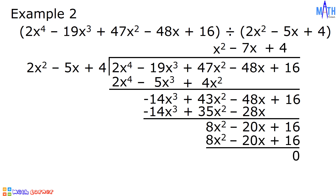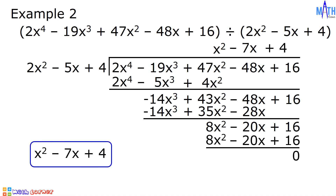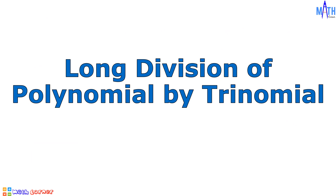it means that 2x squared minus 5x plus 4 is a factor of 2x raised to the 4th minus 19x cubed plus 47x squared minus 48x plus 16. The quotient is x squared minus 7x plus 4. And that is how to divide a polynomial using long division.